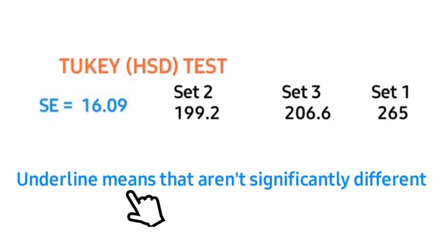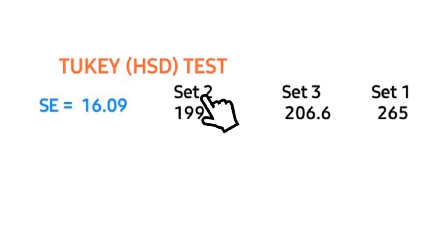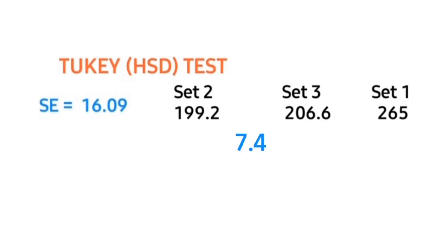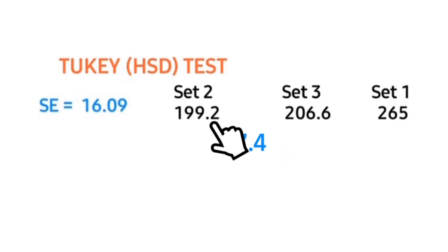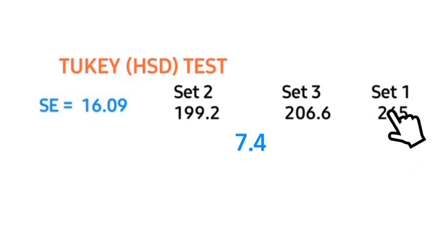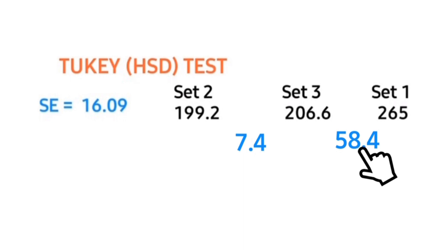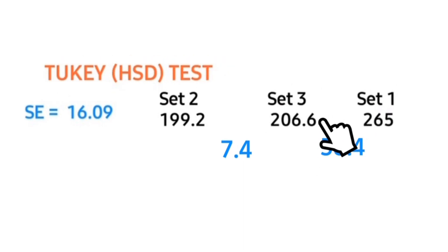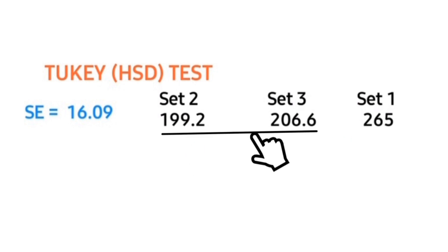The next step is to underline means that are not significantly different. Comparing the mean of Set 2 with the mean of Set 3, their difference is 7.4. Comparing Set 1 with Set 3, the difference is 58.4 — obviously the difference between these two sets is very wide, yet there is no significant difference between them. So we underline this pair.